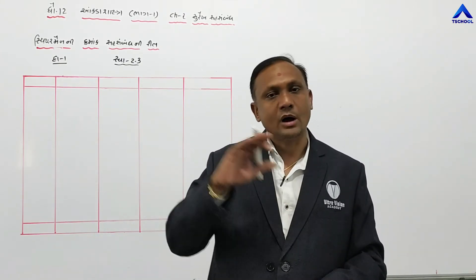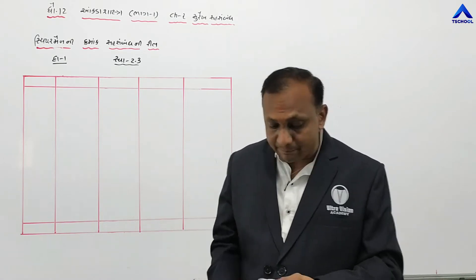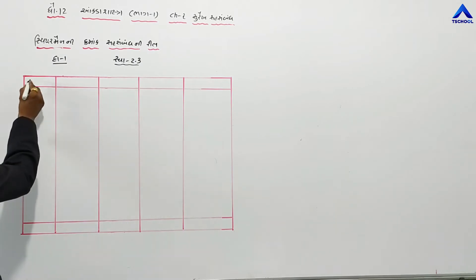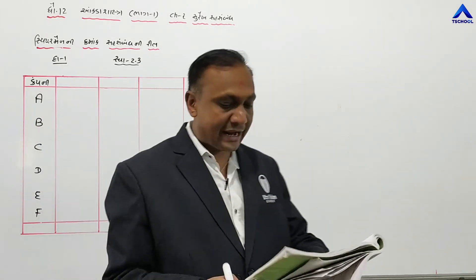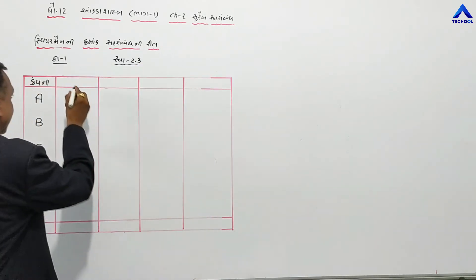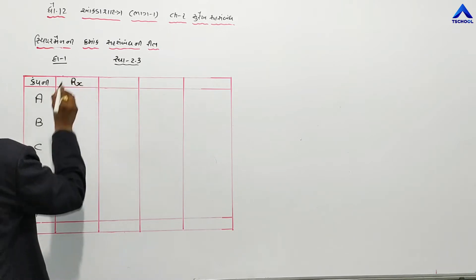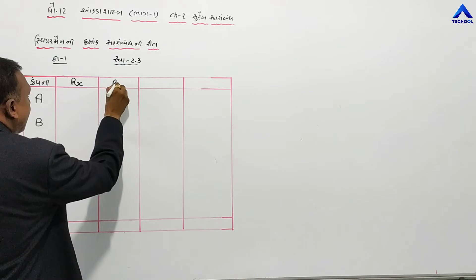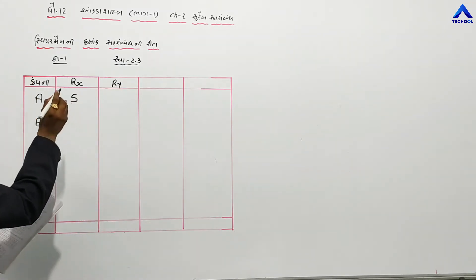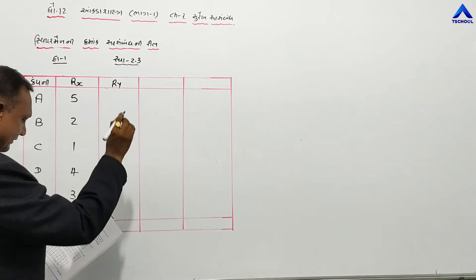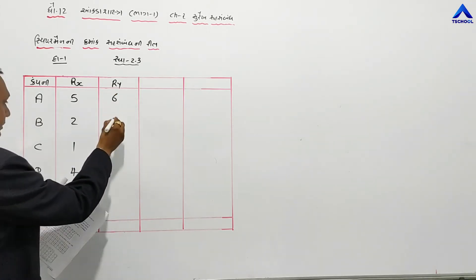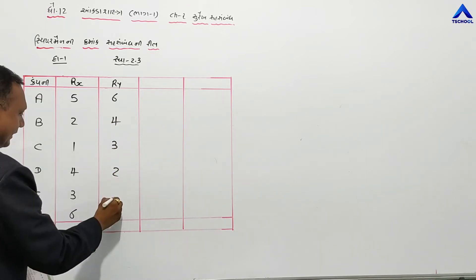Let's create a table. The first column has Excel notation: A, B, C, D, E, F. Then we have the Rx column with values: 5, 2, 1, 4, 3, 6. And the Ry column with corresponding values.